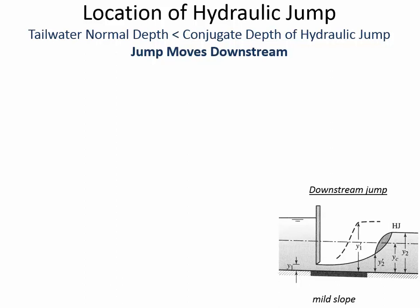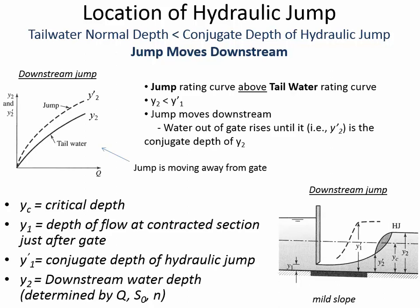The supercritical depth has to get deeper and deeper until it has the same momentum function, and then it can go through the hydraulic jump. Looking at the tailwater rating curve to emphasize: it carries more flow — it's further to the right on the x-axis where Q is flow rate — than the jump rating curve.